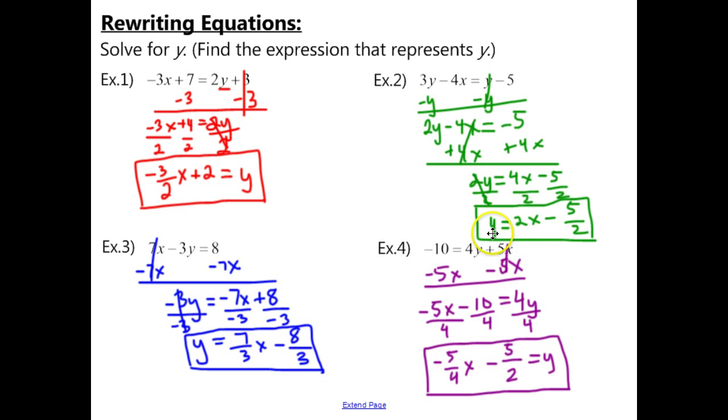For example 2 hopefully you got y equals 2x minus 5 halves. Now remember you could have your equation flipped around from mine. It could say 2x minus 5 halves equals y or negative 5 halves plus 2x equals y or you could have y equals negative 5 halves plus 2x. As long as each term is correct and the correct terms are on the correct side of the equation then it's fine.